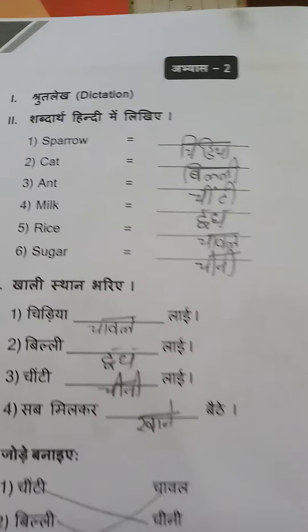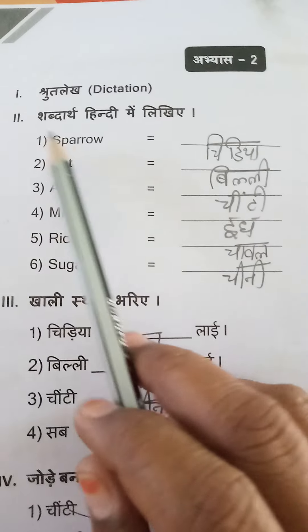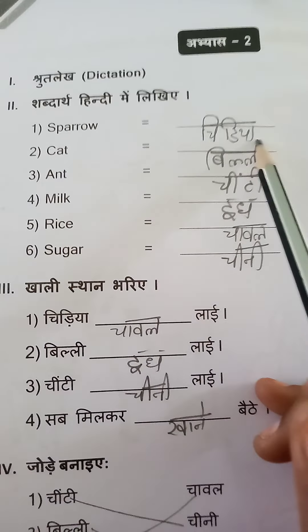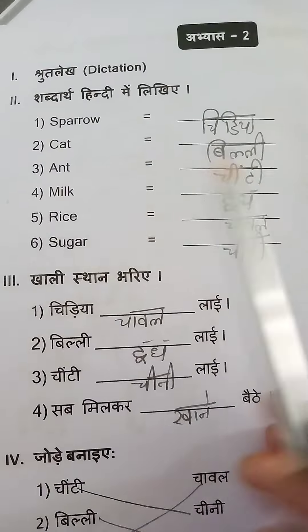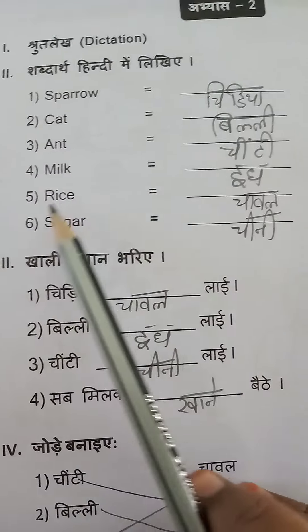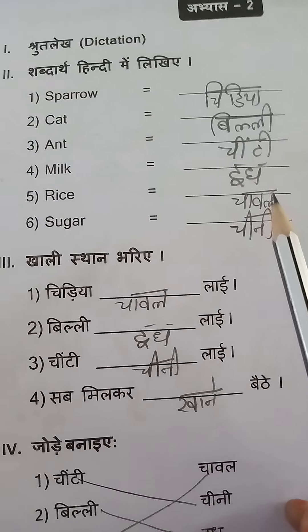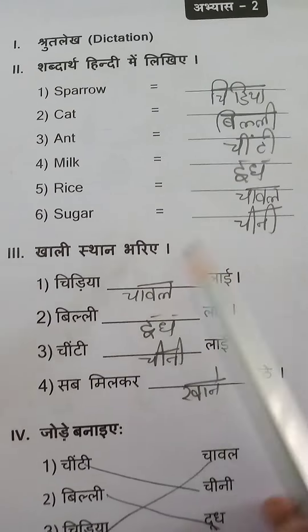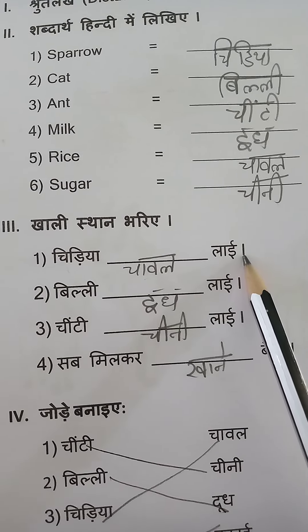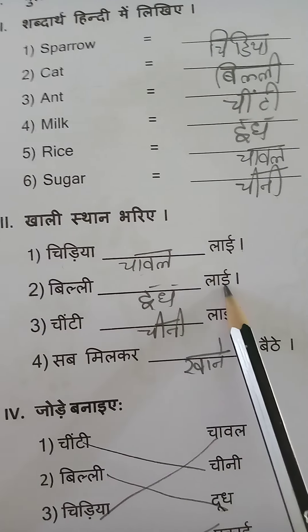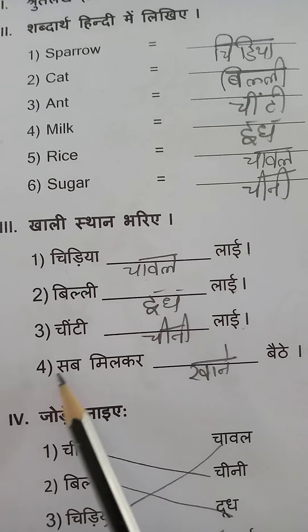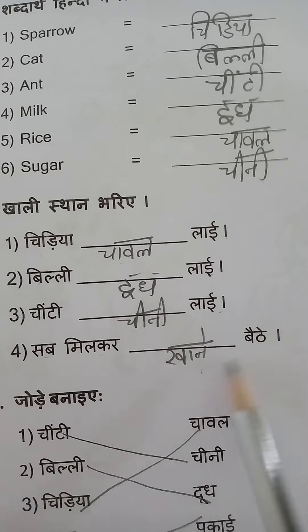Now page number 12 — sparrow meanings. Sparrow: chidia. Cat: bili. Ant: chinti. Milk: dood. Rice: chaval. Sugar: chini. Fill in the blanks: Chidia chaval lai. Bili dood lai. Chinti chini lai. Sab mil kar khaane baite.